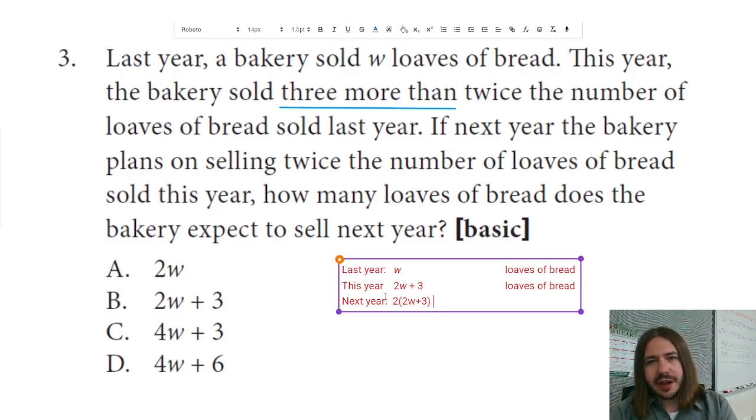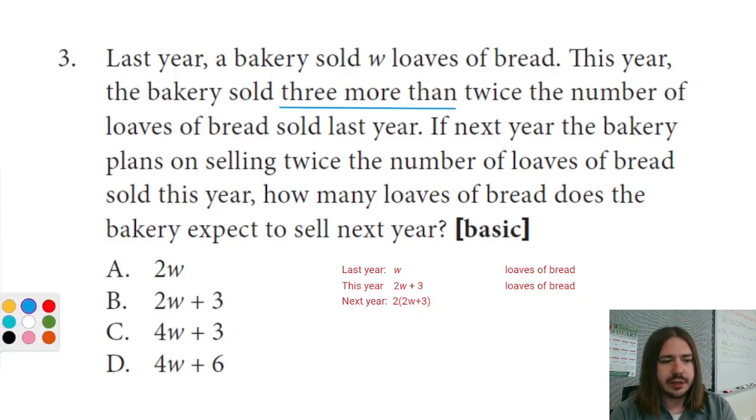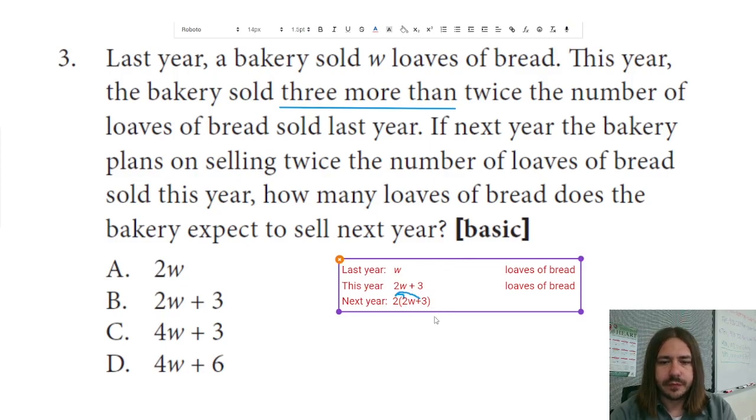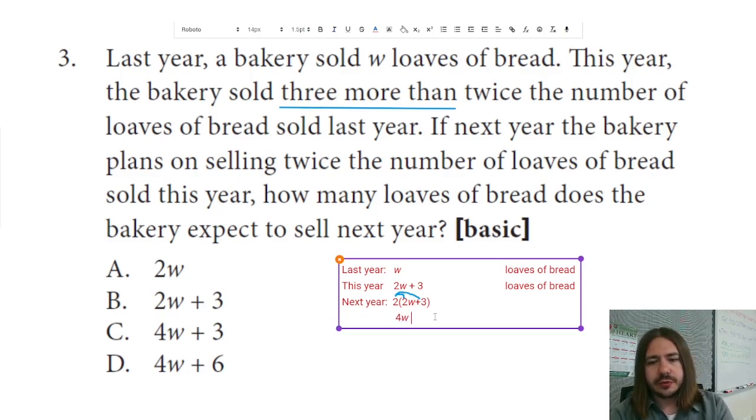So this is going to be our answer. But as you can see, none of the answer choices look like this. So we do have to do a little bit of algebraic manipulation here. Specifically, we're going to distribute the two. And that means we're going to multiply two by both 2W and 3. So two times 2W is going to be 4W. And then two times 3 is 6. This is going to give us the simplified form of the expression.